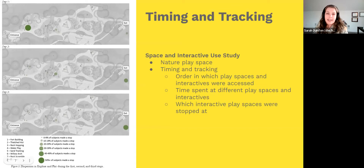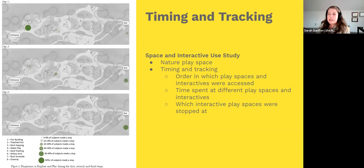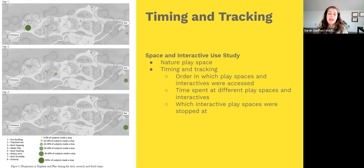Now we're going to get into the actual case studies — five examples of novel methods I've used or seen. The first is timing and tracking. I described it in the context of a museum exhibit; here's an example from an outdoor nature play space. We wanted to evaluate it — it had different nature play elements throughout. We did observations for timing and tracking, watching visitors and tracking what interactives they approached in what order and how long they spent at each.